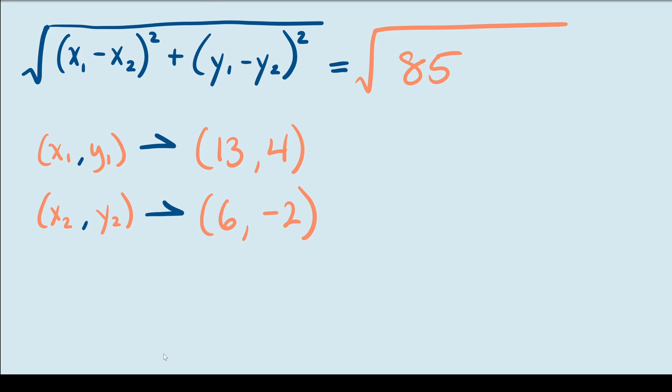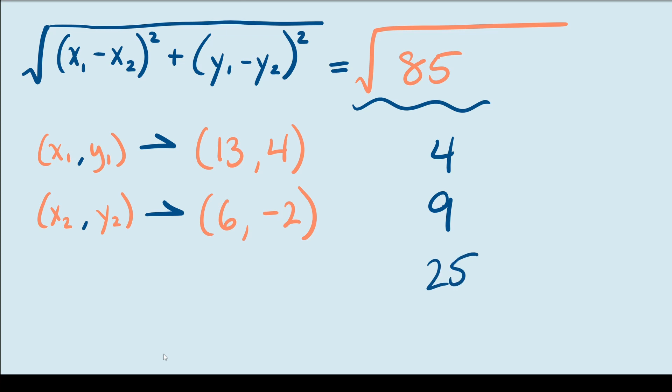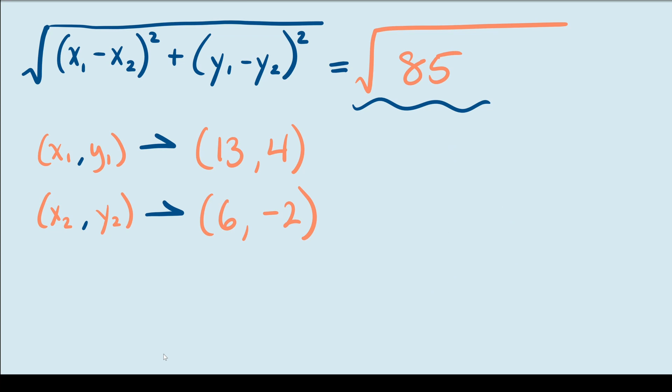Something I didn't mention in the last example: we need to check whether the square root of 85 can be simplified by factoring out a perfect square. Looking at the most common perfect squares — 4, 9, and 25 — none of them divide evenly into 85. So square root of 85 is already in its most simplified form, and that's our final answer.